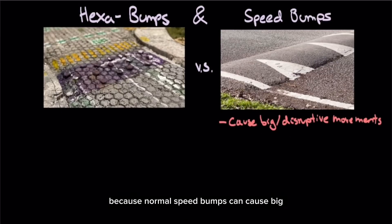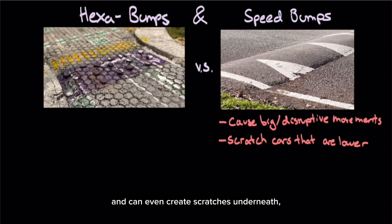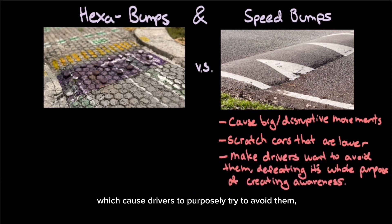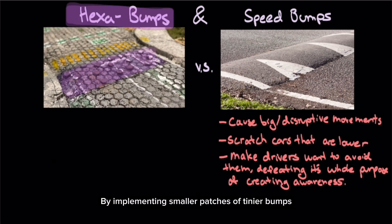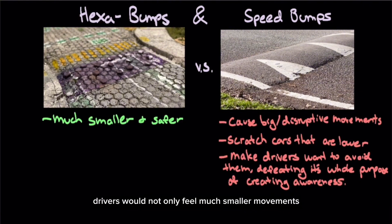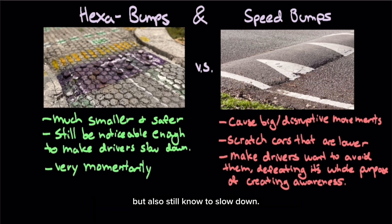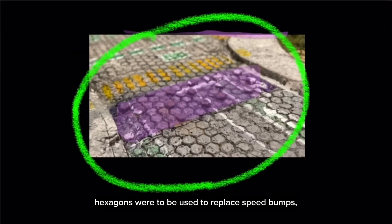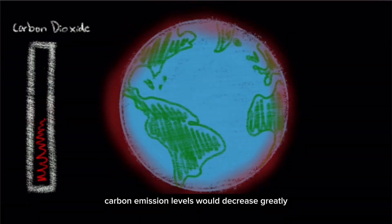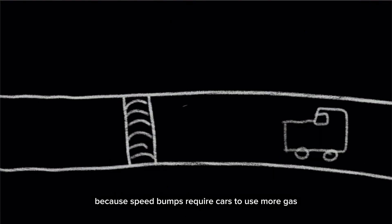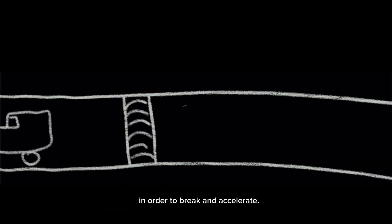Additionally, these hexabumps would be particularly useful because normal speed bumps can cause big and disruptive movements to cars and can even create scratches underneath, which cause drivers to purposely try to avoid them, defeating the whole purpose. By implementing smaller patches of tinier bumps with raised hexagons, or hexabumps, drivers would not only feel much smaller movements but also still know to slow down. Moreover, if these bumpy hexagons were to replace speed bumps, carbon emission levels would decrease greatly because speed bumps require cars to use more gas in order to brake and accelerate.